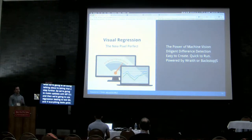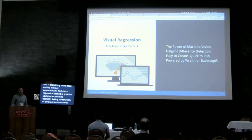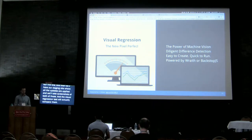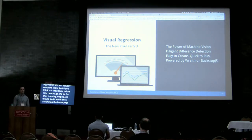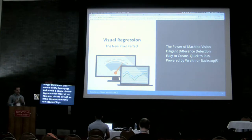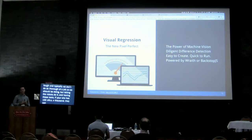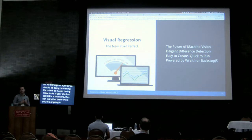Visual regression testing is great for updates because it takes screenshots of different environments or different URLs. We'll have our live site and our staging site where all the updates are applied, and we'll take screenshots of both and the visual regression test will compare them. Before tools like this, I would do QA after running plugin updates by clicking around the homepage and maybe a couple of other pages. But how many of you have ever clicked through the entire site every single time you run updates? With these tools, if your site has a hundred or a thousand URLs, they can test all of them.